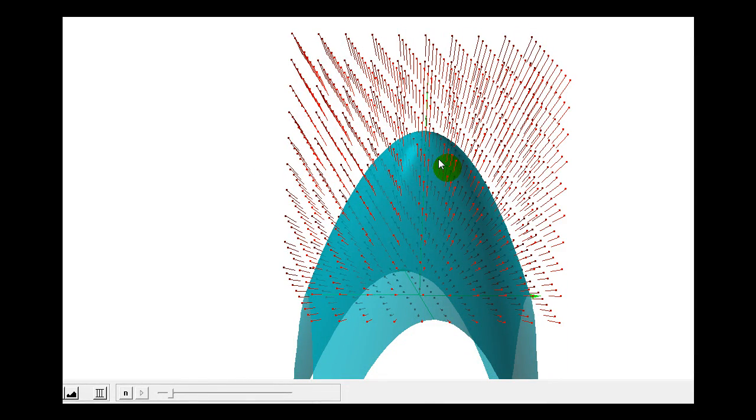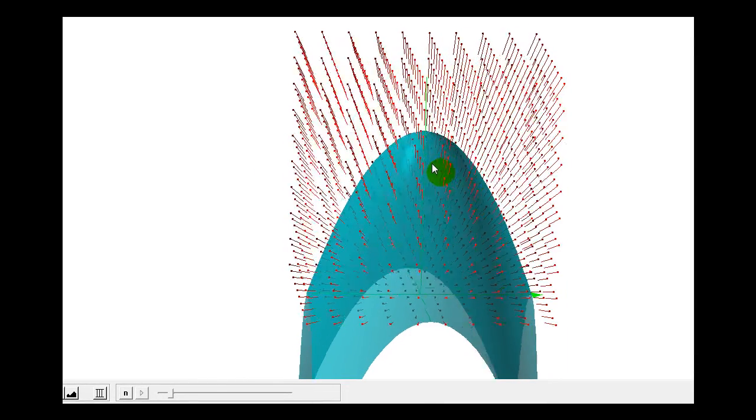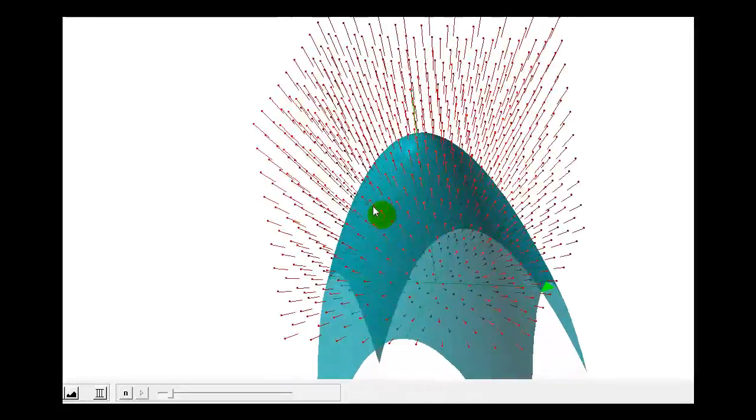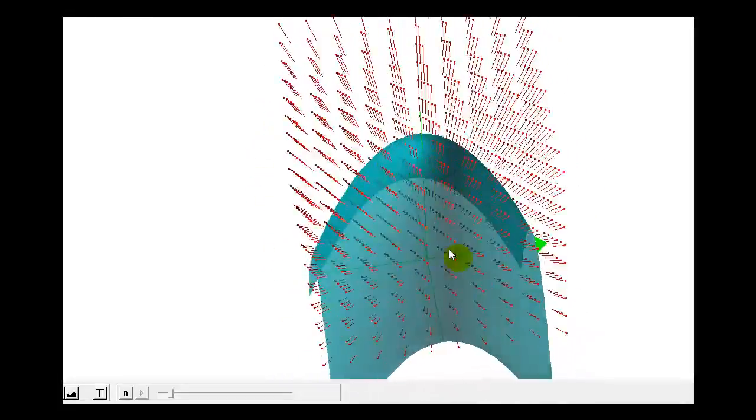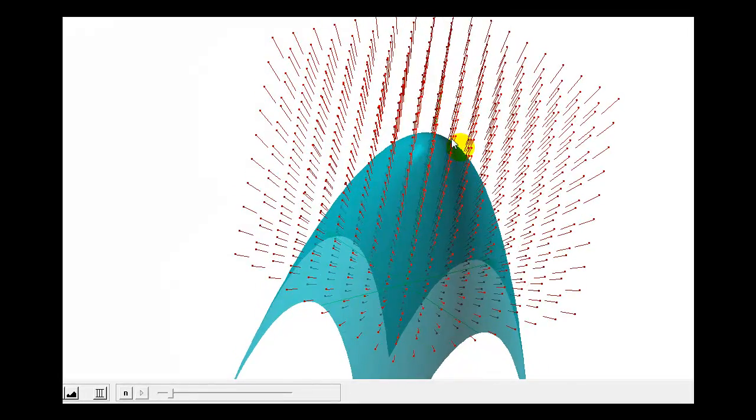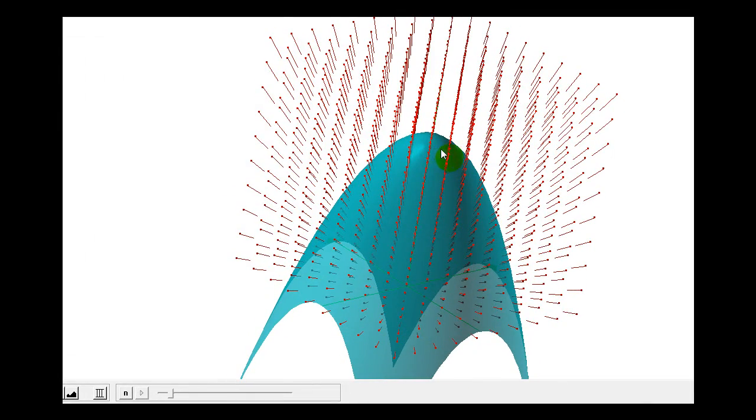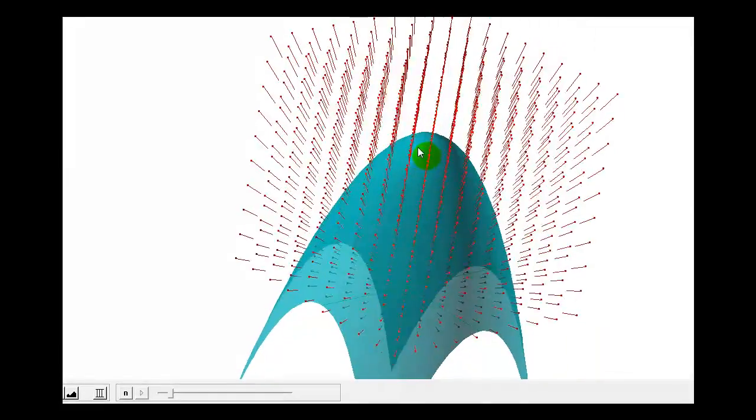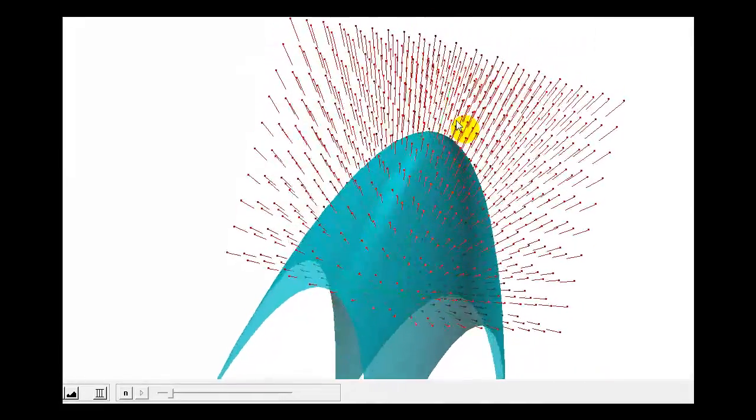Here's our surface in green and our vector field in red. So the value of our surface integral will represent the flow rate across this blue surface. And you can see from the graph, it looks like it will be upward in the same direction as our orientation, so this should give us a positive flow rate.